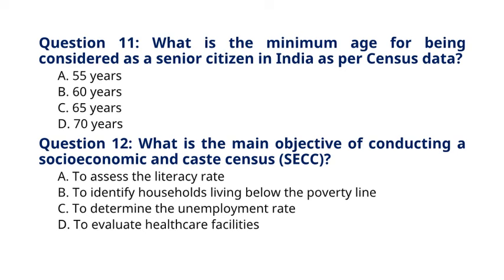Question 12: What is the main objective of conducting a Socio-Economic and Caste Census (SECC)? A. To assist the literacy rate. B. To identify households living below the poverty line. C. To determine the unemployment rate. D. To evaluate healthcare facilities. The correct answer to question 12 is option B: To identify households living below the poverty line. Explanation: SECC aims to identify households living below the poverty line to facilitate targeted welfare schemes.